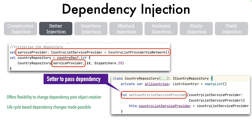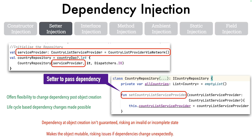But there are also disadvantages. Dependency at object creation isn't guaranteed, risking an invalid or incomplete state. If someone who doesn't know how to use country repository forgets to pass this dependency before calling any of its methods, things might go wrong. It offers flexibility, but there is always a risk that the object is used without the dependency it needs to function properly. The second issue is it makes the object mutable, since setter methods can be called at any point in time, risking issues if dependencies change unexpectedly.